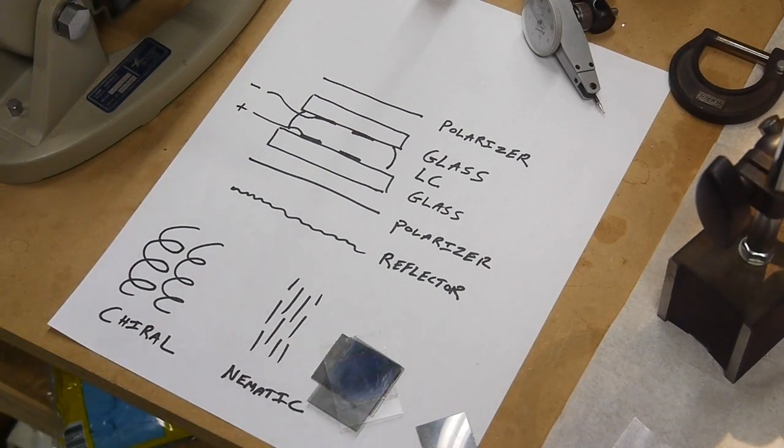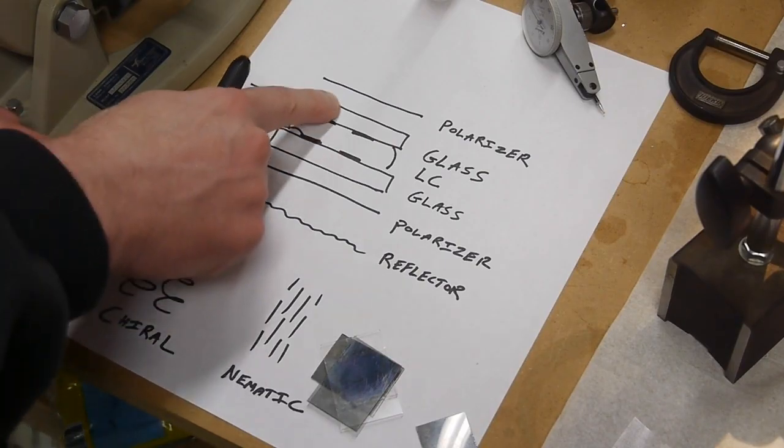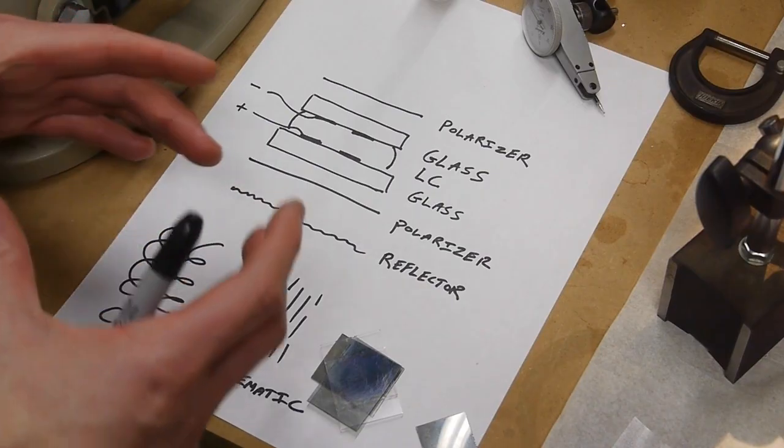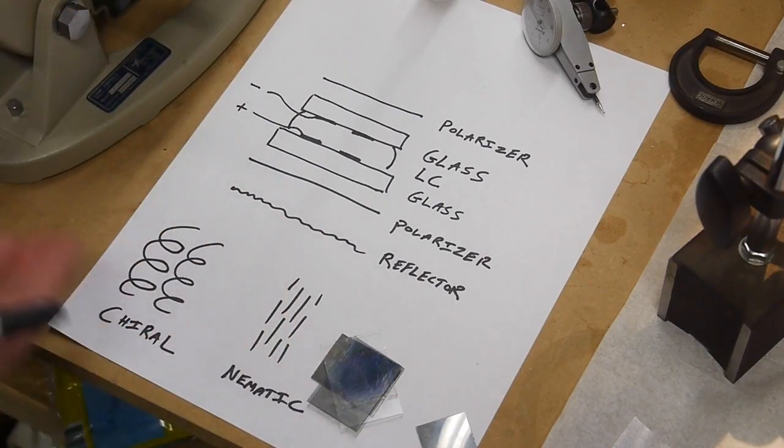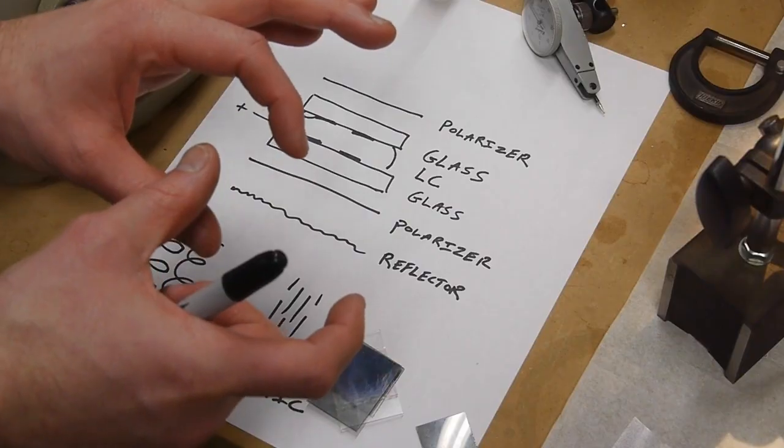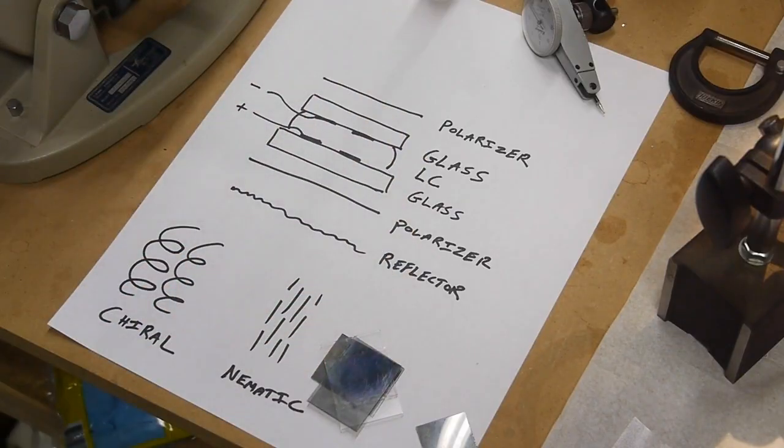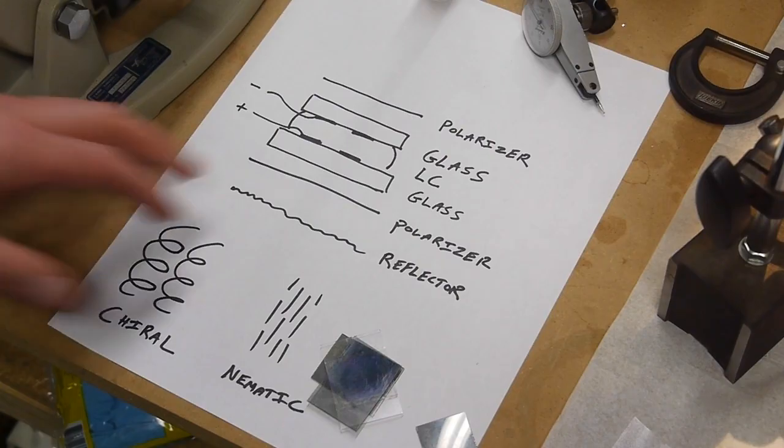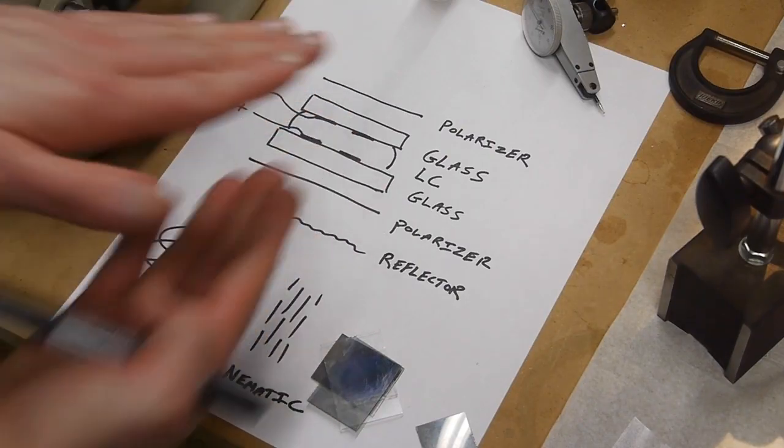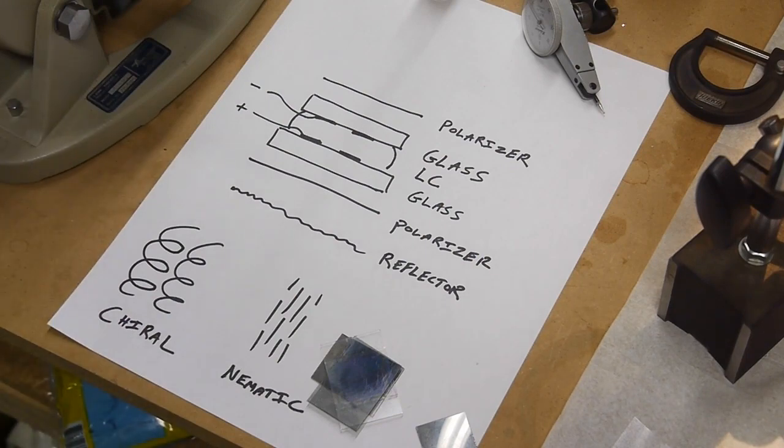One is how do we keep these two pieces of glass separated by 5 microns across the entire size of the display? At the time they didn't have 50-inch television screens, but they did want to make watches or alarm clocks and they wanted those pieces of glass to be separated by 5 microns. What you do is you actually just throw a bunch of glass beads down into this area and then squash the two pieces of glass together and let the glass beads hold them apart at the right distance. Sounds primitive, but that's actually what we do today.